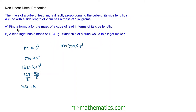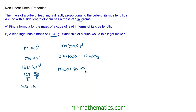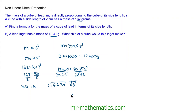This is our formula for part a. For part b, we've been told that the ingot has a mass of 12.4 kilograms, but our formula uses grams. So we convert by multiplying by 1000, giving 12,400 grams. So 12,400 is equal to 20.25 s cubed. Dividing both sides by 20.25, s cubed equals approximately 612.35. Taking the cube root of both sides, the side length of the cube is approximately 8.5 centimetres.